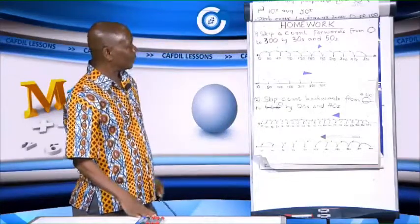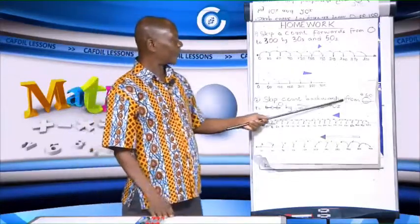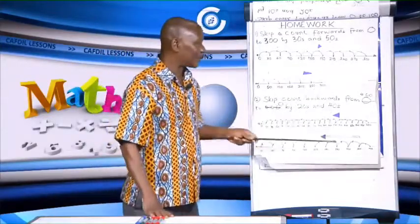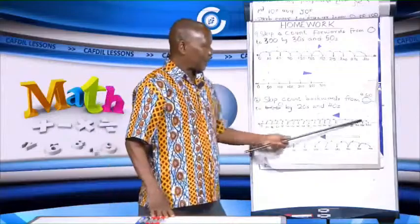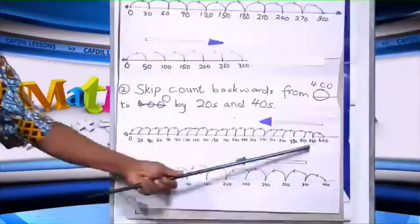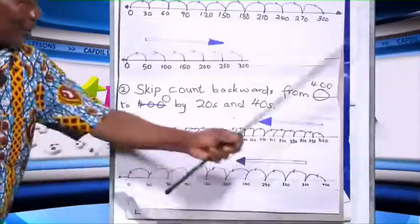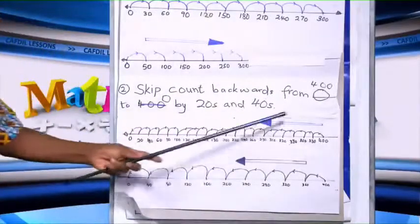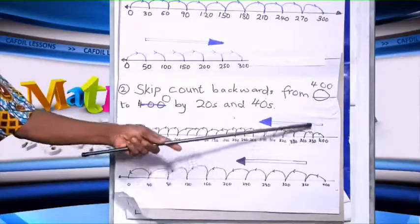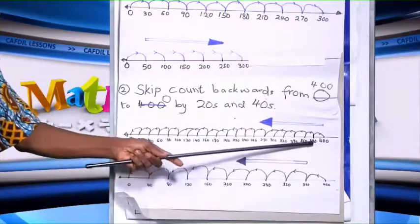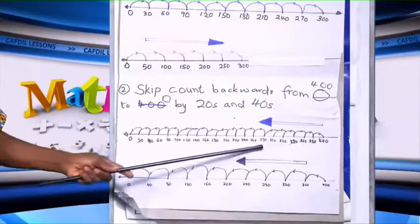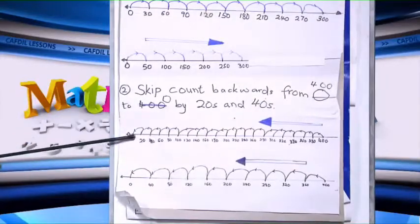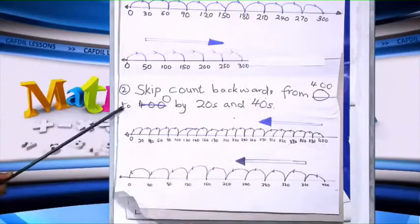Then we go to question 2: skip count backwards from 400 to 0 by 20s and 40s. If we draw the number line from 0 to 400, going backwards we move back. So we are starting from 400, minus 20: 380, 360, down, down, down until we come to 0. That is 400 down to 0 by 20s.